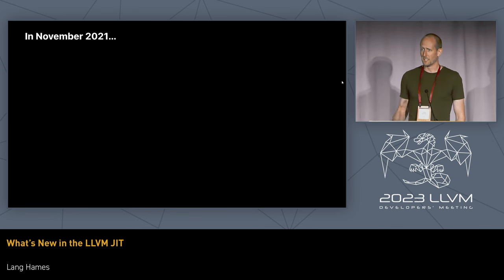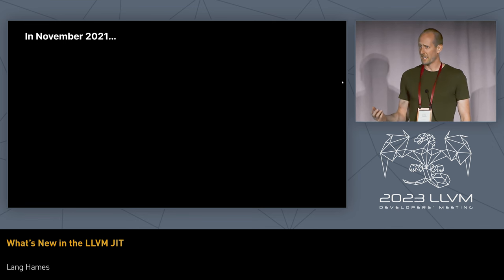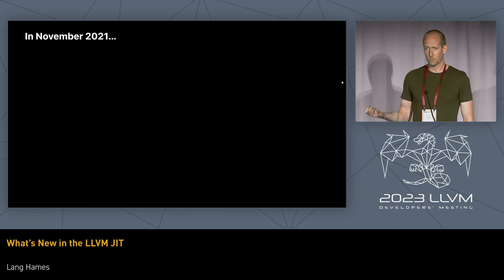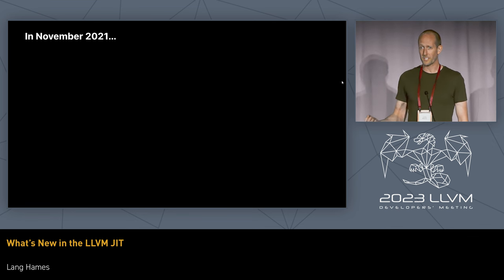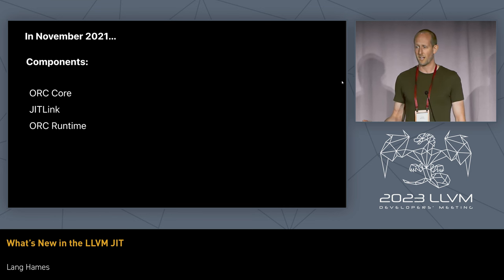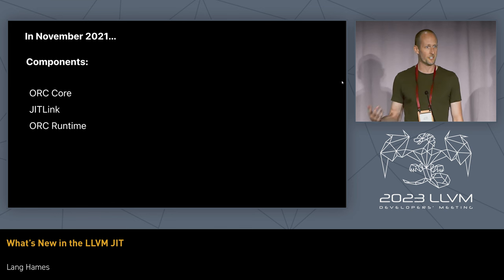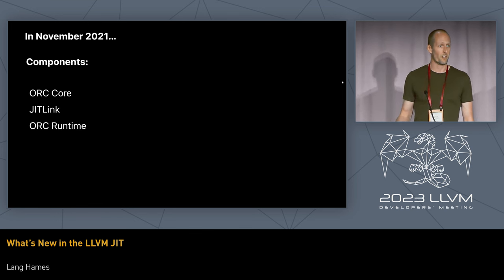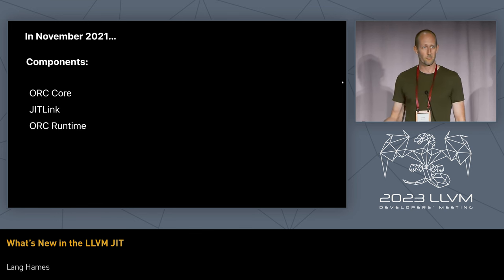Just a quick recap. The last update was at the Virtual Developers Meeting in 2021, and that talk covered the three primary components of the ORC JIT APIs: the ORC Core, which coordinates actions; JIT Link, which links JITted code together; and the ORC Runtime, which provides support functions to JITted code.